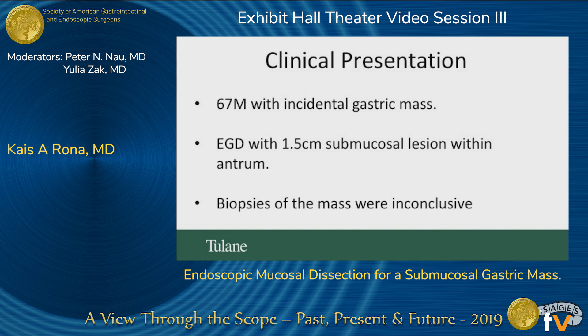This is a case of a 67-year-old male who presented to us with an incidental gastric mass. He was asymptomatic, had no history of gastrointestinal disorders or cancer. The workup included an EGD, which demonstrated a 1.5-centimeter submucosal lesion in the distal antrum. This lesion was biopsied multiple times, although biopsy results were inconclusive. Imaging findings didn't show anything concerning such as lymphadenopathy or metastatic lesions.